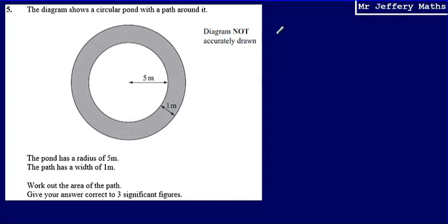So what I'm going to need to do is I'm going to need to use the formula for the area of a circle, which is pi r squared. And I'm going to start by working out the area of this larger circle.